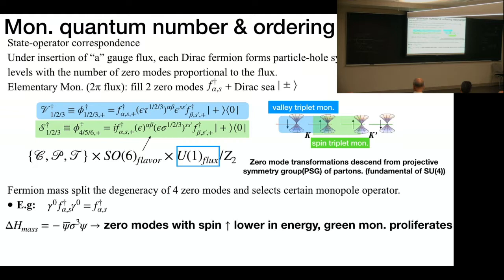After a symmetry-breaking mass is spontaneously generated—for example, a quantum spin Hall mass in the z-direction—actually the zero mode energy gets split up. And here, the zero mode associated with the spin-up Dirac fermion actually gets lowered. So a certain monopole that gets two spin-up zero modes filled will have lower energy.